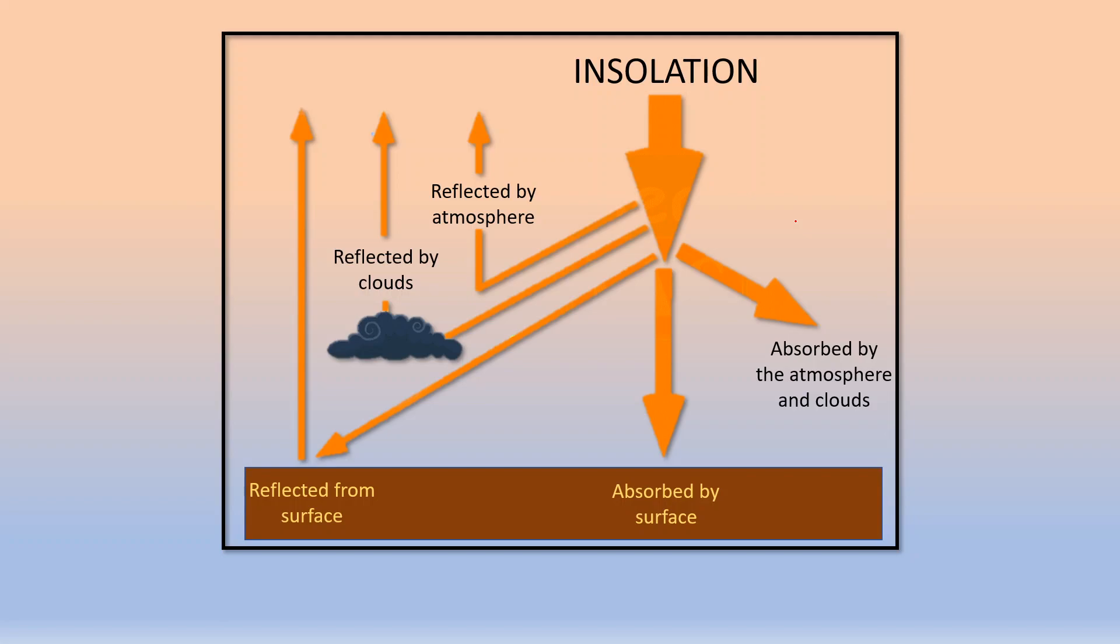Now if you look at this diagram you will find that insolation which is reaching the earth, nearly 19% of it is being absorbed by the atmosphere and clouds. About 51% is being absorbed by the surface and 4% of this absorbed heat is reflected from the surface.